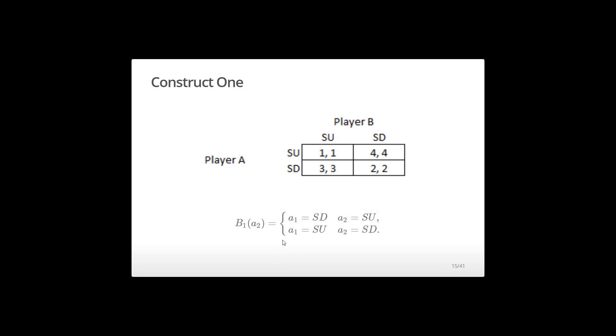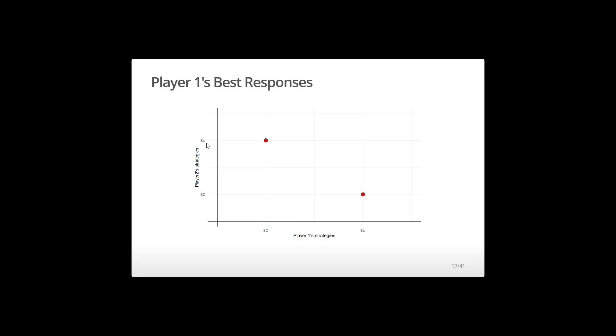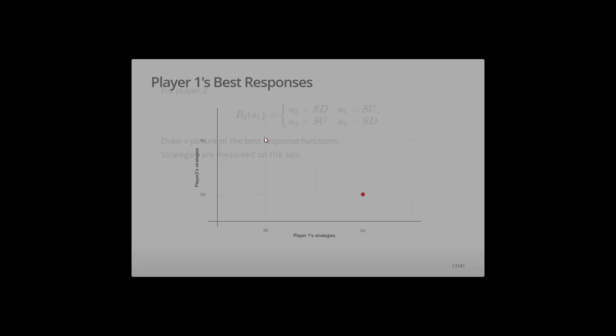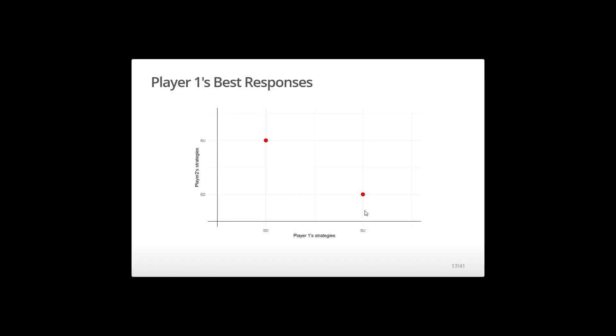All right. Well, let's go back to player one's best response function. There is a best response. I'm going to put a point, just a dot in my picture at the point A1 equals slow down, A2 equals speed up. So A1 equals slow down, A2 equals speed up. Put a dot. I'm going to go put another dot in the picture. Player one speeds up, player two slows down. Player one speeds up, player two slows down. Player one slows down, another dot.